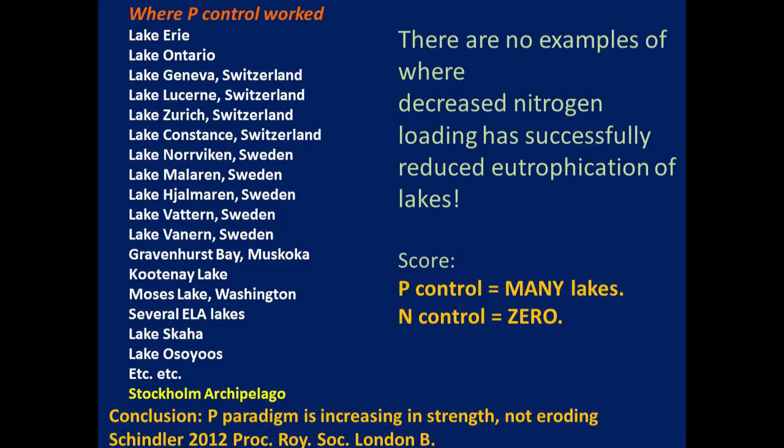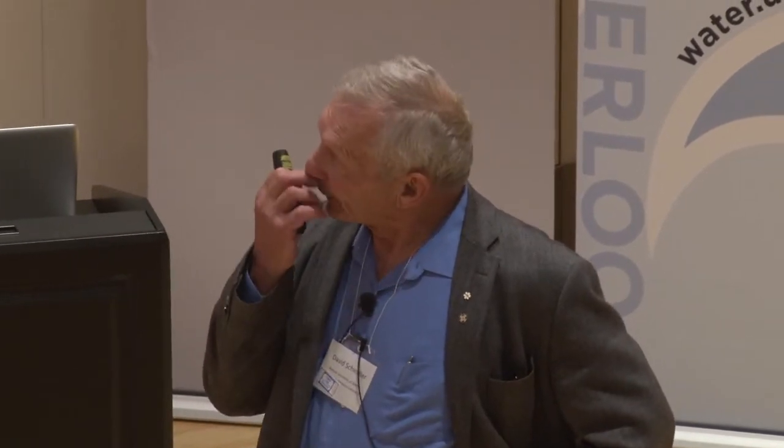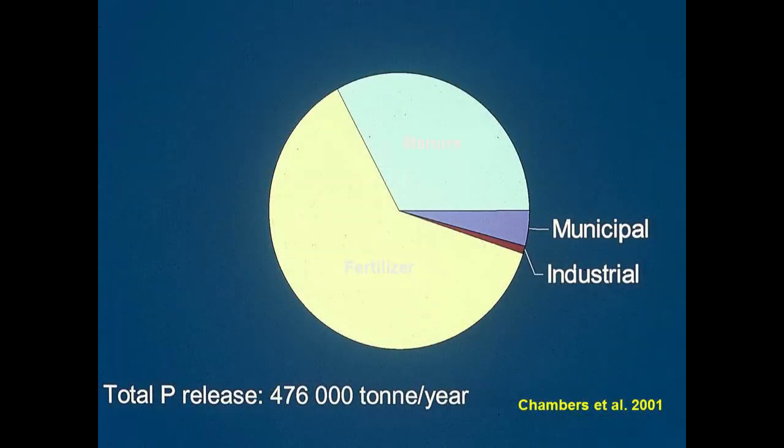Strangely, there are still scientists saying that to get effective control, you need to control nitrogen as well, despite no examples supporting that. As you can see, there's a partial list of lakes that recovered — for some reason, people don't title papers 'recovery of Lake X from eutrophication,' so you have to dig through differently-titled studies to find whether the lakes responded. This is all summarized in a paper I wrote a couple of years ago, but these nitrogen advocates are still persisting and confounding the regulation problem.